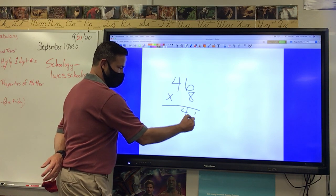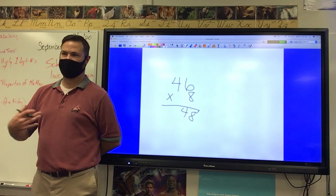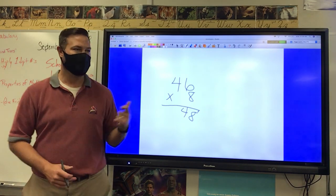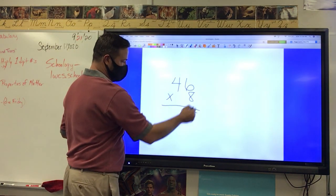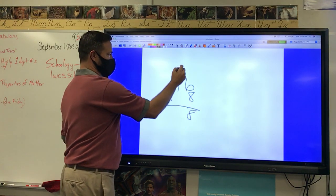So when I come down here, do I put 48 down here like this? No, it's just like adding, just like subtracting, you can only put one number down. What number do I put down underneath? 8. Where do I put that 4? Above the 4.